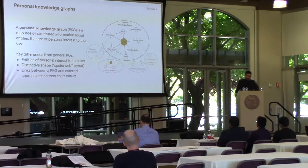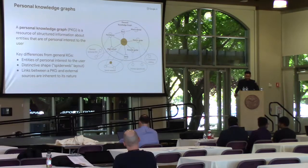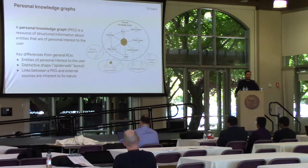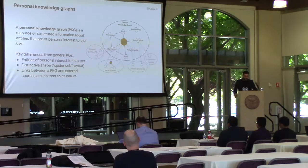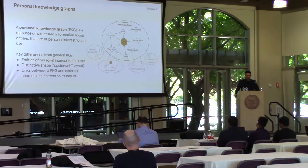A personal knowledge graph is a resource of structured information about entities that are of personal interest to the user. On the right-hand side you can see a small illustration where the user is in the center. That is one differentiating characteristic — everything in this personal knowledge graph has to be directly or indirectly connected to the user, giving rise to a special spider graph layout. Another characteristic is that some of these entities may exist in external resources; the electric guitar, for example, can have an entry in an e-commerce catalog or in a domain-specific knowledge graph. And some of these entities may not have an entry at all.